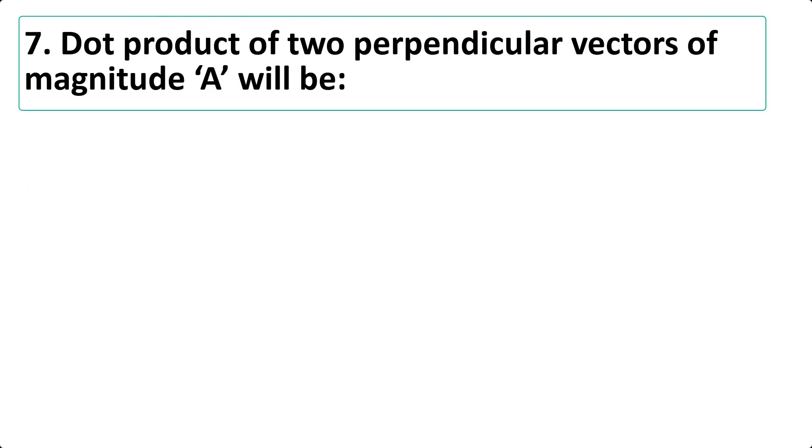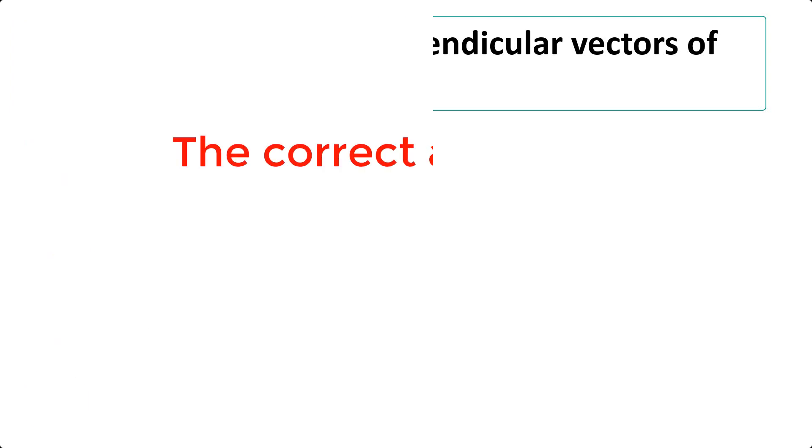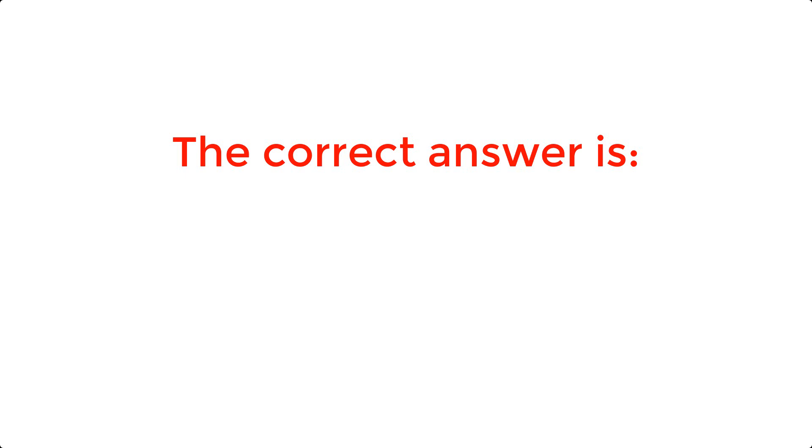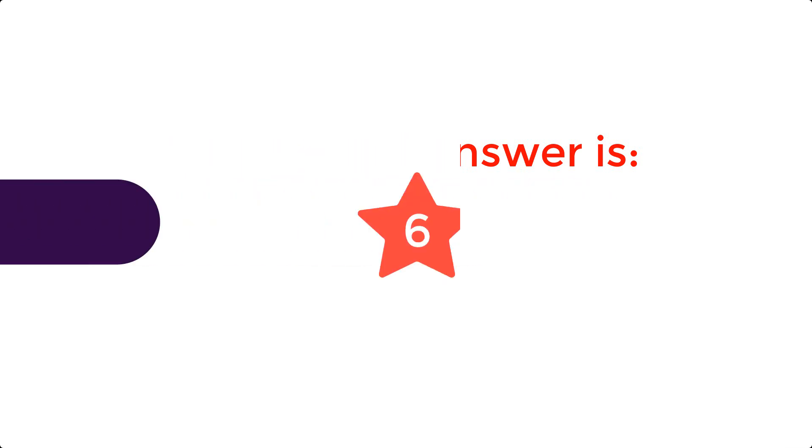Dot product of two perpendicular vectors of magnitude a will be: a. 0 b. a c. 2a d. a square. The correct answer is a. 0. Question 6.